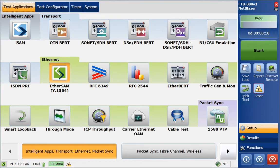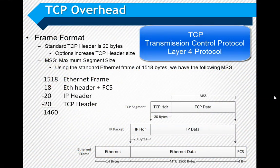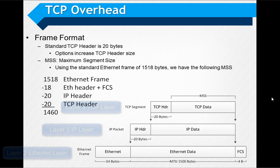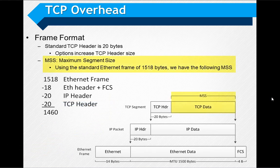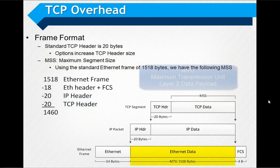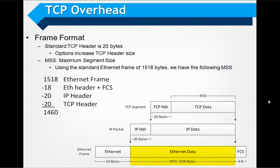Before we dive into these differences, I'd like to spend a bit of time on TCP basics. TCP is a Layer 4 protocol — it sits on top of the IP layer. Key terms often used when talking about TCP include MSS, or Maximum Segment Size, which is the TCP data payload once you remove all the overhead, and MTU, or Maximum Transmission Unit, which is the Layer 2 or Ethernet layer data payload once you strip away the Ethernet overhead.